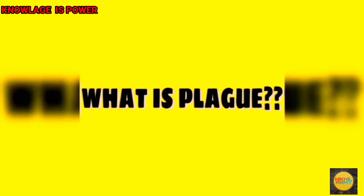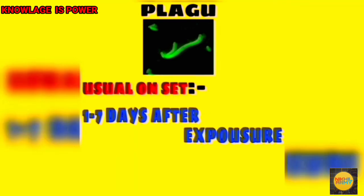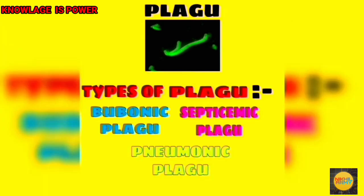Now let's know what is plague. Plague is a disease spread by fleas, rats, and other vectors. There are three types of plague. The symptoms of plague disease are fever, weakness, and headache. The usual onset of plague disease is one to seven days after exposure.